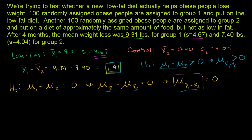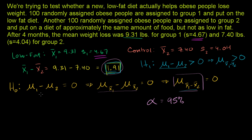We're going to decide on a significance level of 5%. That means, assuming the null hypothesis is correct, we want there to be no more than a 5% chance of getting this result — no more than a 5% chance of incorrectly rejecting the null hypothesis when it is actually true, which would be a type 1 error. If there's less than a 5% probability of this happening, we're going to reject the null hypothesis in favor of the alternative.